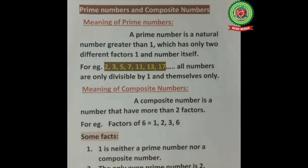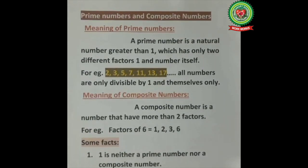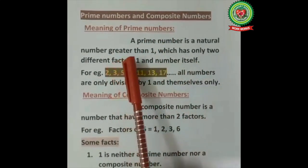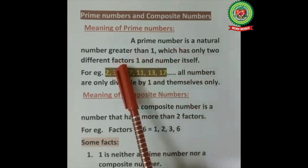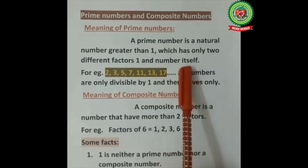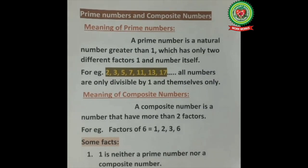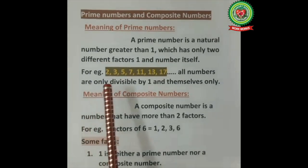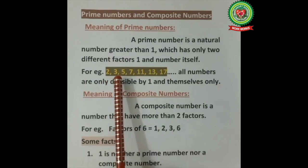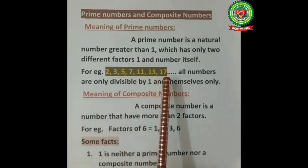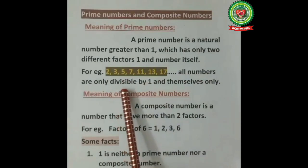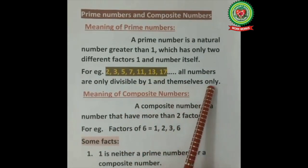Now we will move to prime numbers and composite numbers. A prime number is a natural number greater than 1 which has only two different factors: 1 and the number itself. Examples of prime numbers are 2, 3, 5, 7, 11, 13, 17, and so on. All these numbers are only divisible by 1 and themselves.